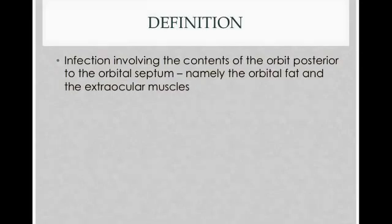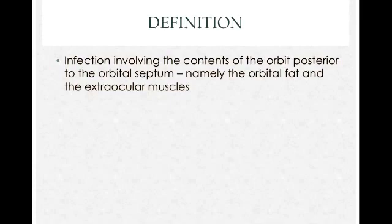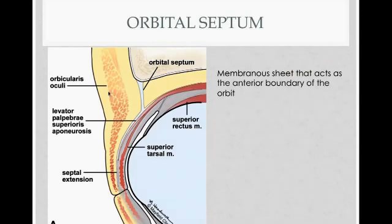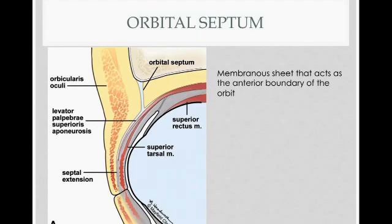Orbital cellulitis is an infection that involves the contents of the orbit, posterior to the orbital septum — namely the orbital fat and the extraocular muscles. If you look at a cross-section, you'll see the orbital septum extends down from the frontal bone. This membranous sheet separates the orbital fat and extraocular muscles behind the globe from what's in front. An infection in front is called preseptal or periorbital cellulitis, whereas what's behind this septum is considered orbital cellulitis.